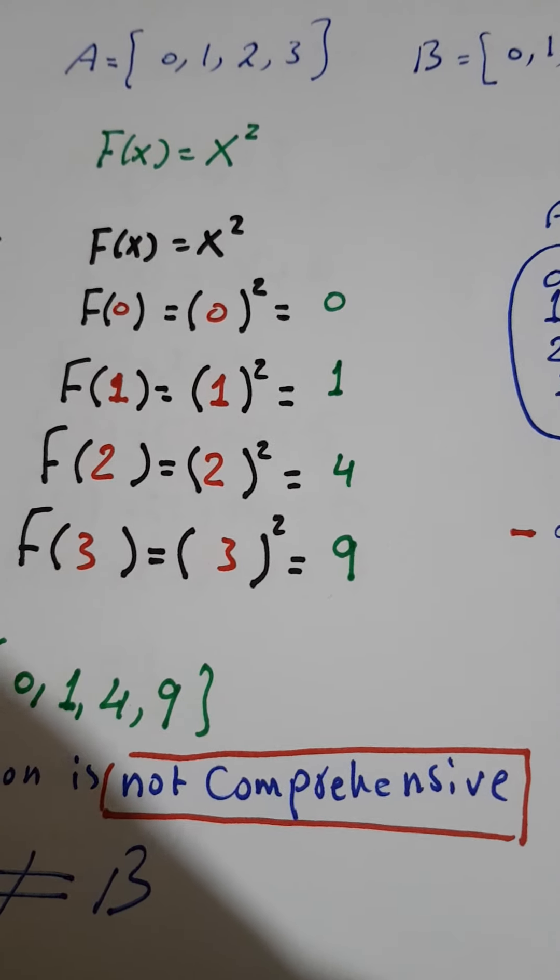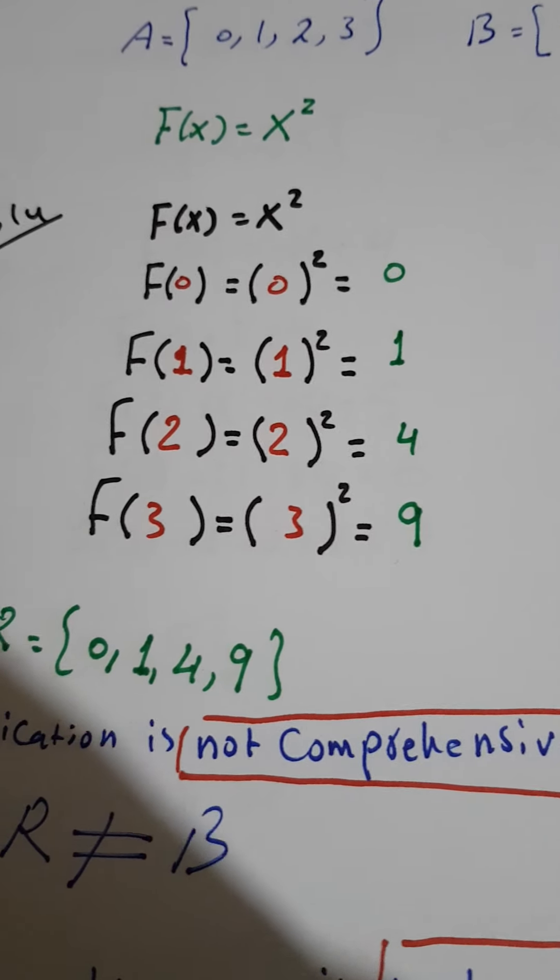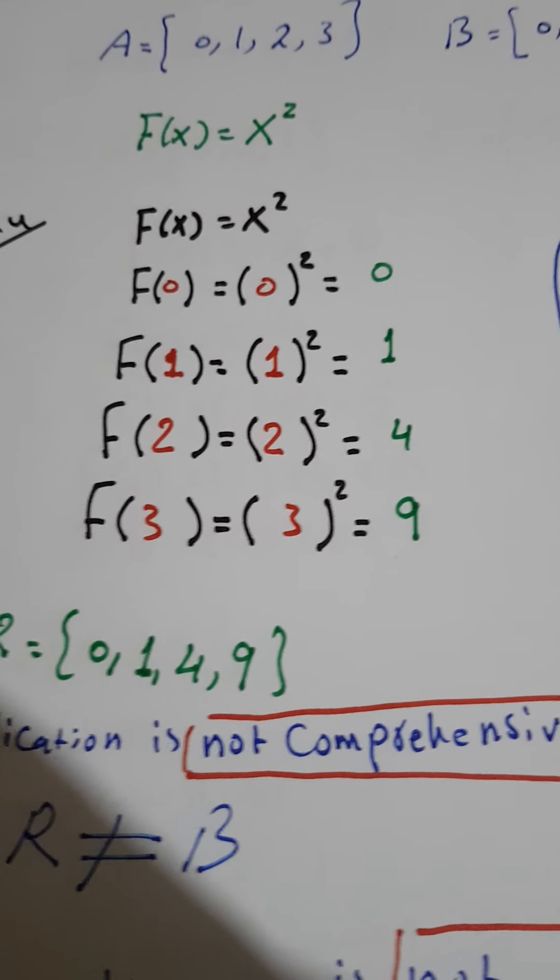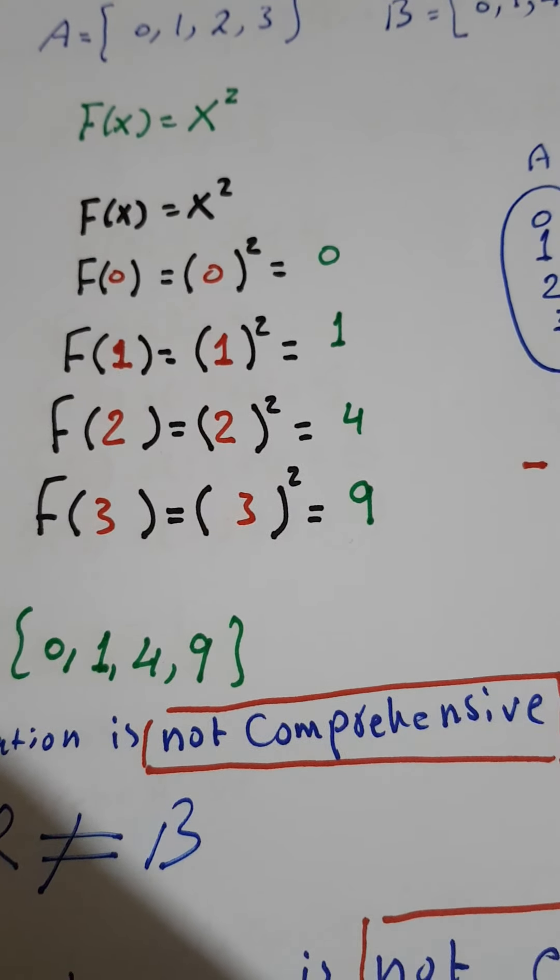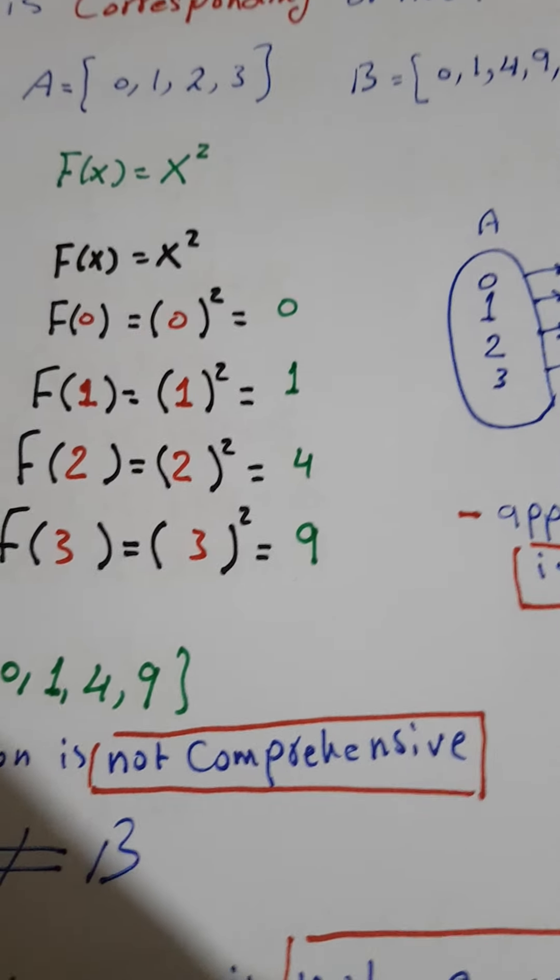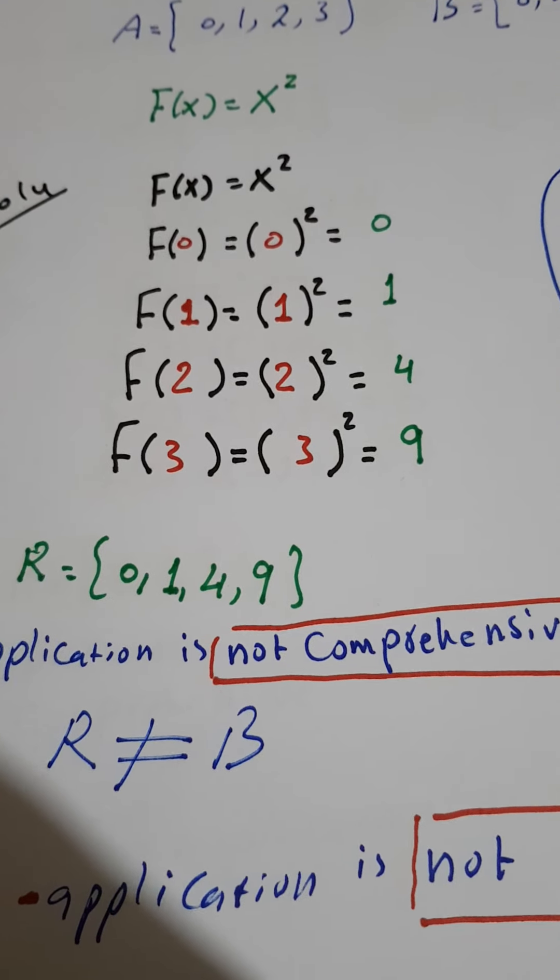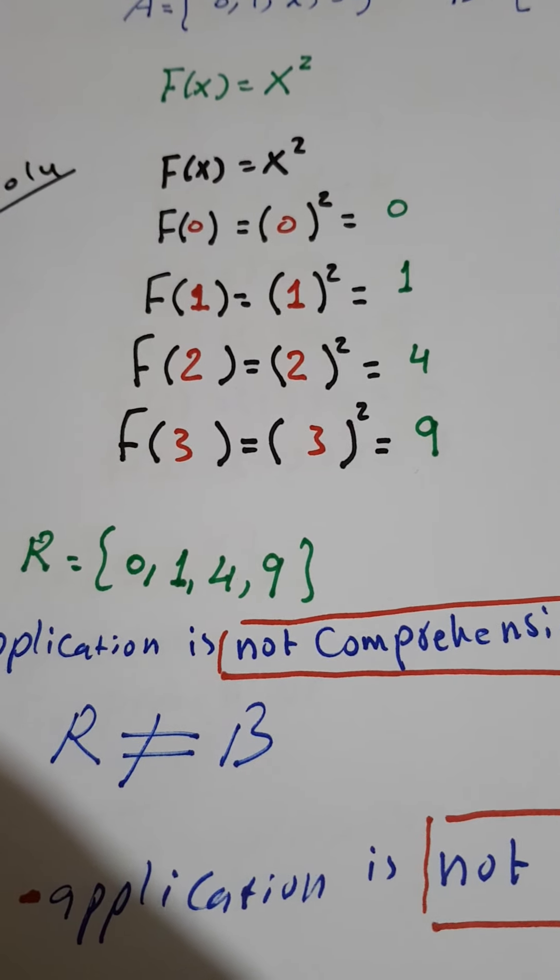...1: 1² = 1, 2: 2² = 4, and 3: 3² = 9. We have range = {0, 1, 4, 9}. The application is not comprehensive. Why? Because range is {0, 1, 4, 9}...